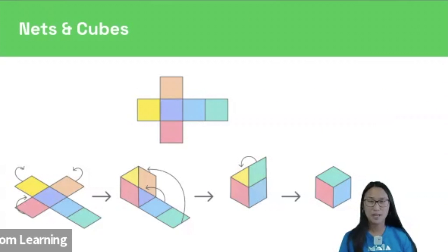Let's now think about some nets and cubes. So what is a net? It's the shape that a cube or any other 3D shape makes when you flatten it out.